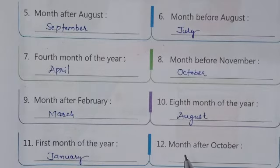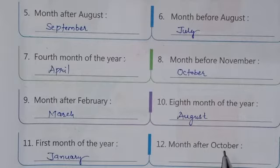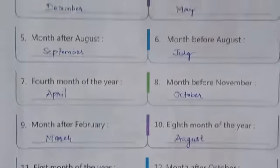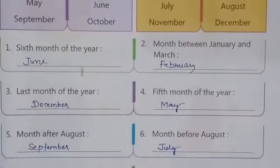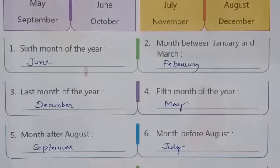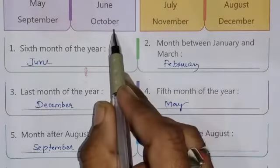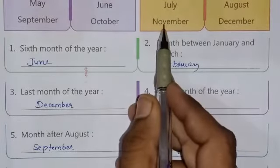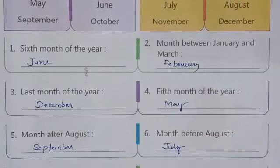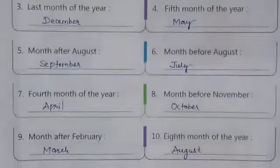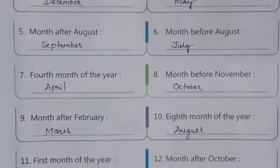The next question: the month after October. Which month comes after October? Looking at the list of months — after October, the month is November. So write down the answer: November.